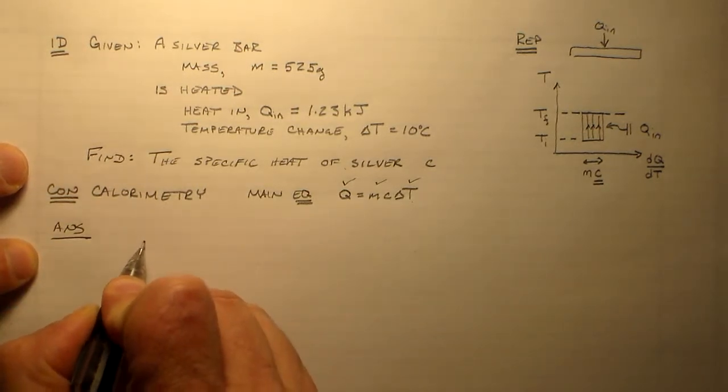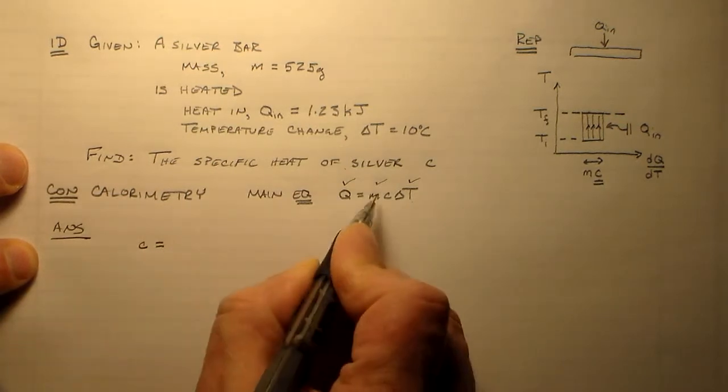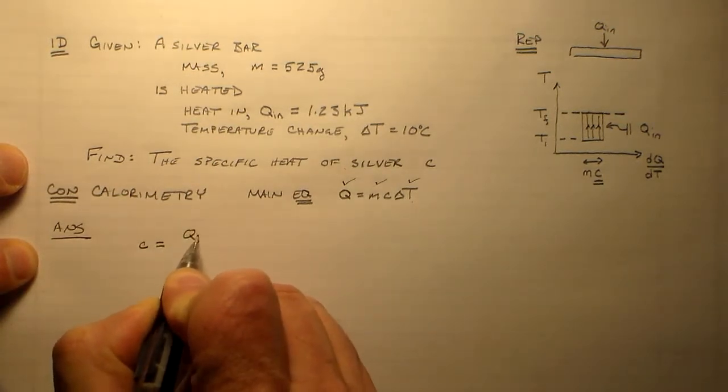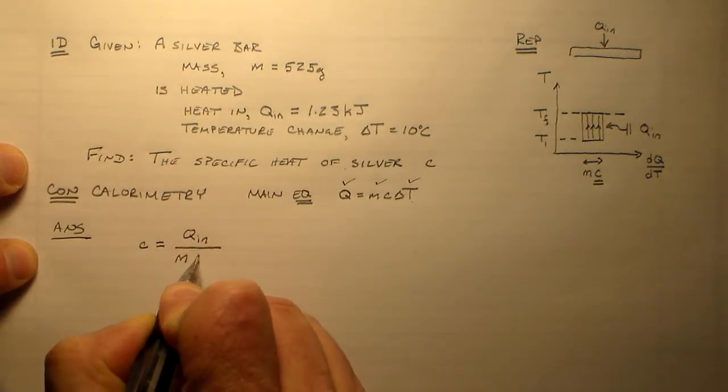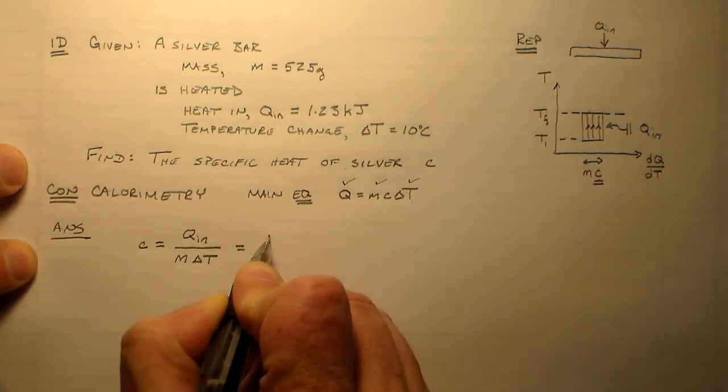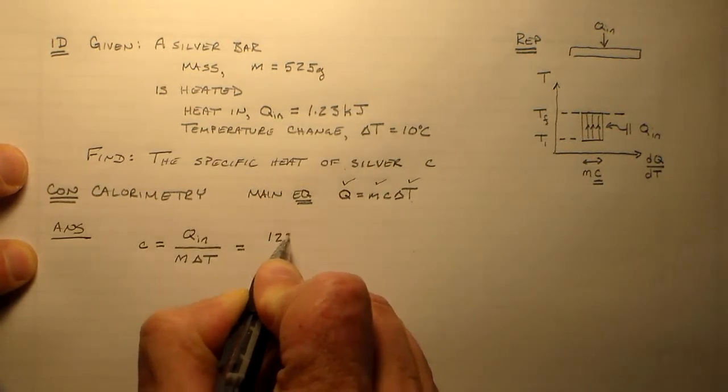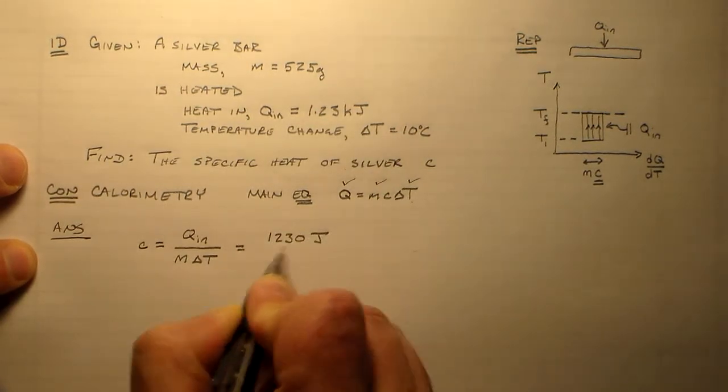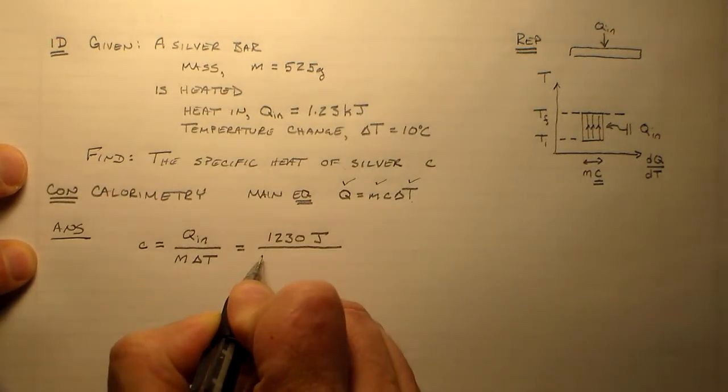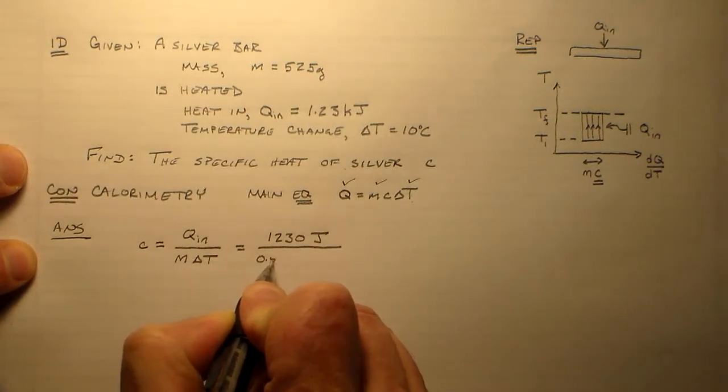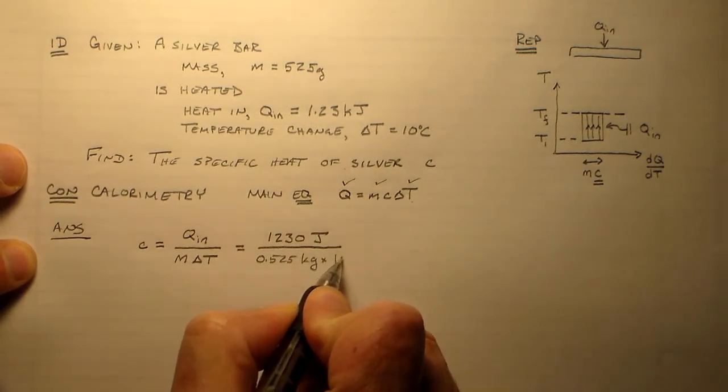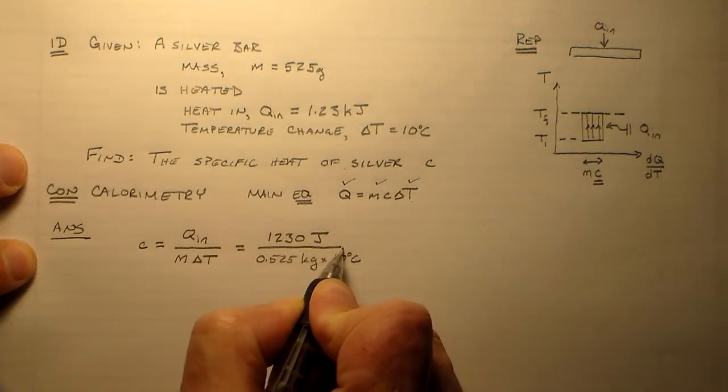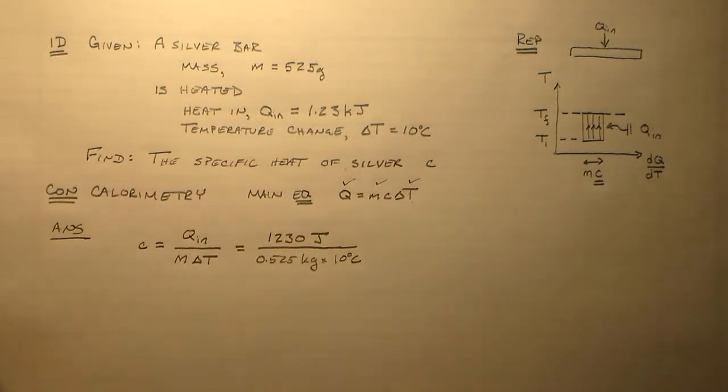And that answer is C is equal to QN over M delta T. Which is equal to 123,000 joules over 0.525 kilograms times 10 degrees C.